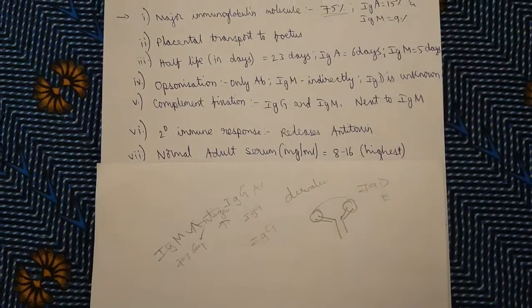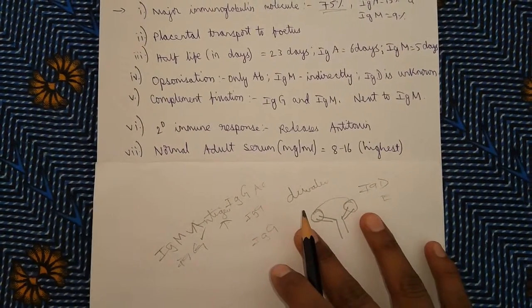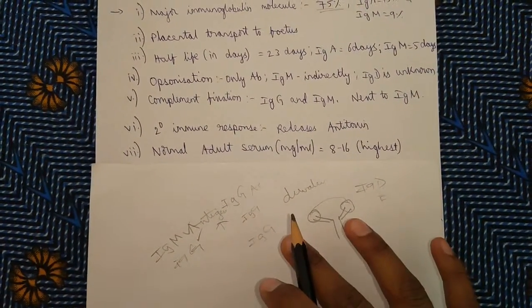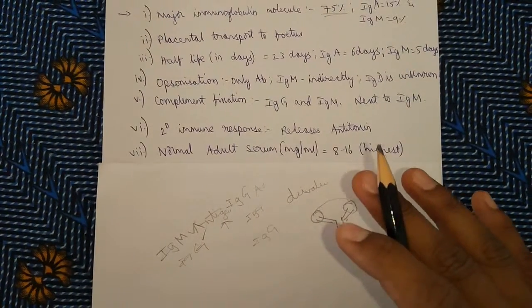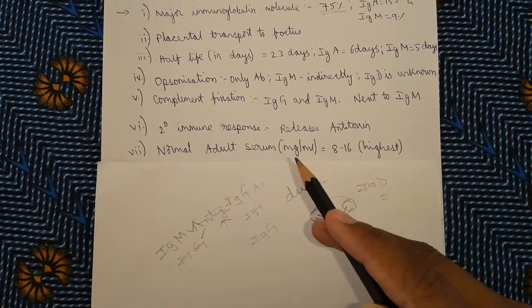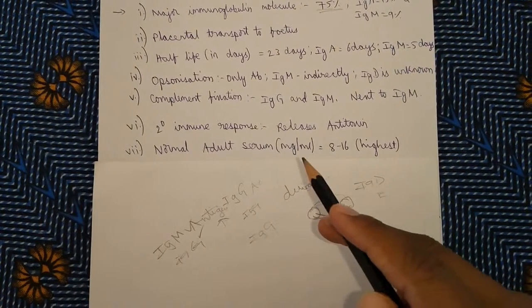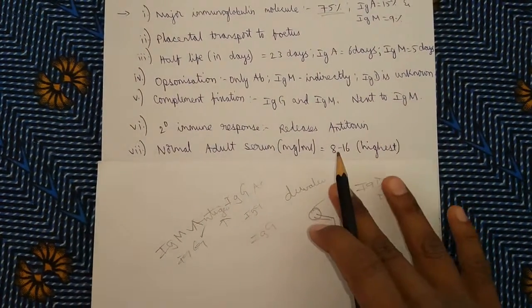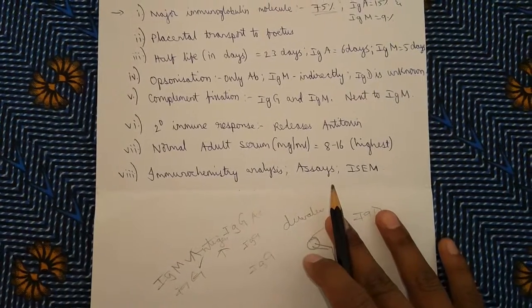Normal adult serum. As we already discussed, IgG is more percentage present in serum, and its count is 8 to 16 milligrams per ml, which is highest. Immunochemistry analysis assays and ISEM. It means the IgG is widely used in analysis and diagnostic techniques.